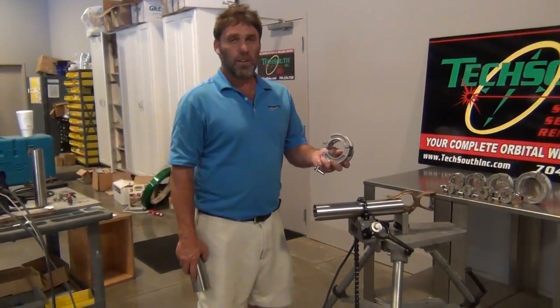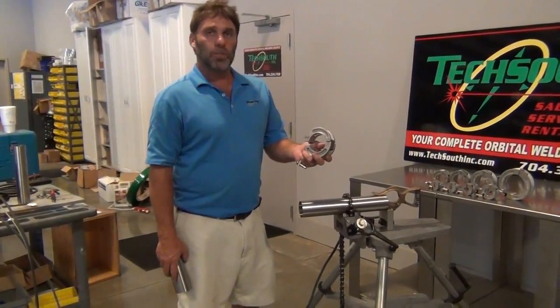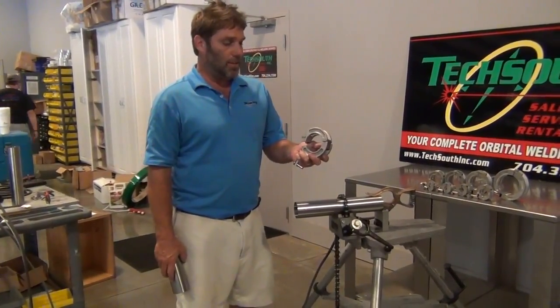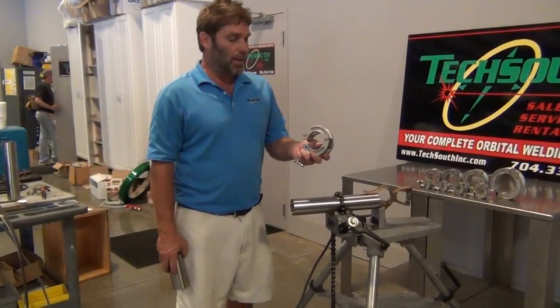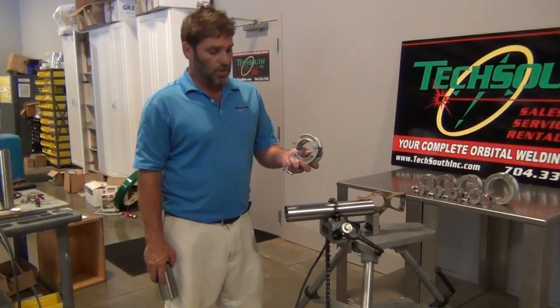What you're looking at here is a sanitary tack clamp. It's a Tex-Sol sanitary tack clamp. What we use this for is tacking sanitary tubing. We make these in a size range that goes from half inch OD tubing all the way up to six inch OD tubing.